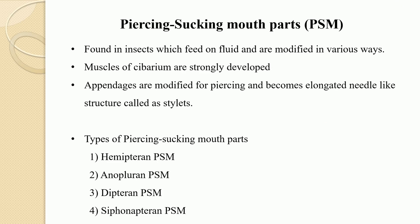Let us see the piercing and sucking mouthparts. These piercing and sucking mouthparts are also referred to as PSM in short form. The mouthparts of insects which feed on fluid are modified in various ways to form a tube through which the liquid fluid can be drawn into the mouth, and usually another tube through which the saliva is passed. The muscles of the cibarium or the pharynx are strongly developed to form a pump, which is useful for creating a suction pressure with the help of which the liquid fluid material can be sucked into the oral cavity.